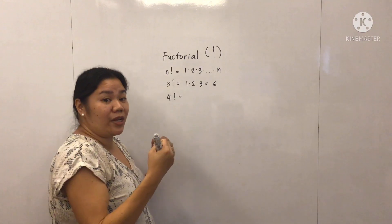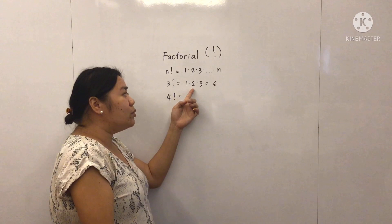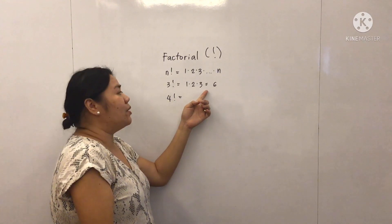Let's look at a particular example like 3 factorial, which equals 1 times 2 times 3, which equals 6.